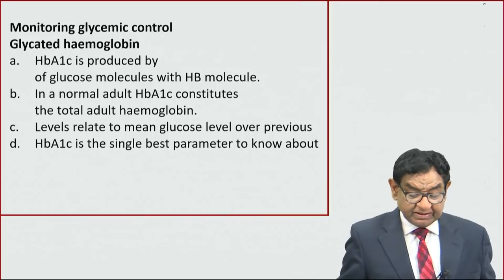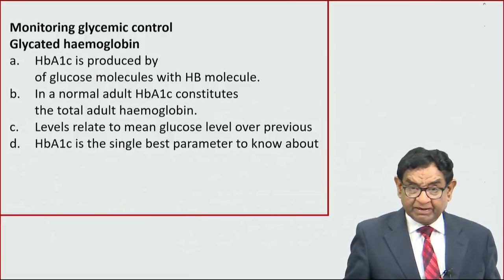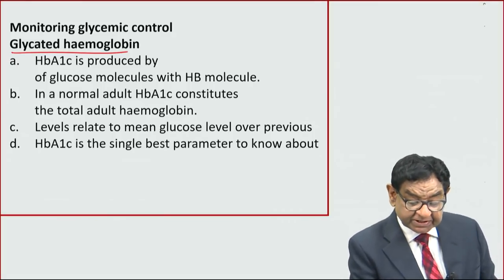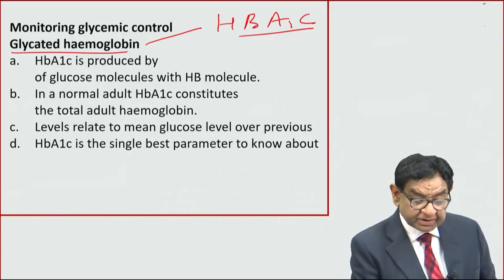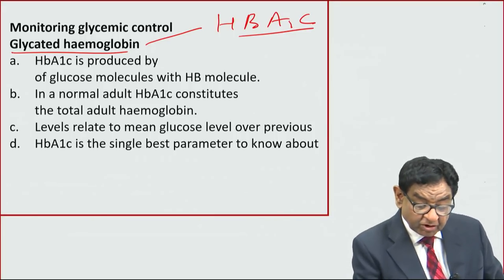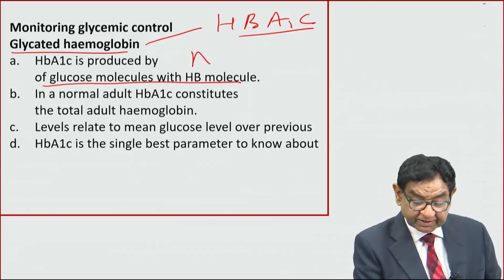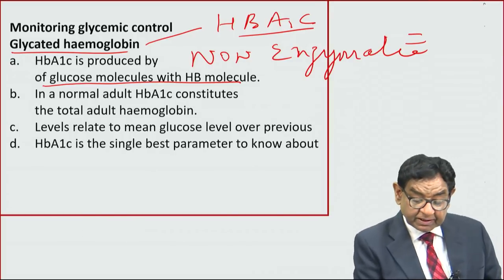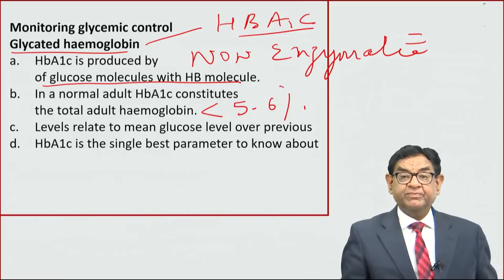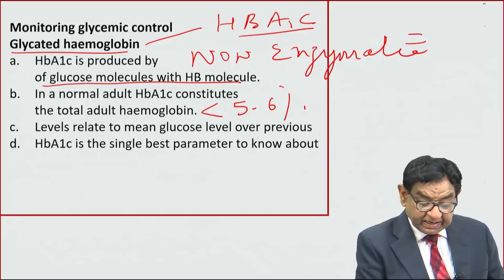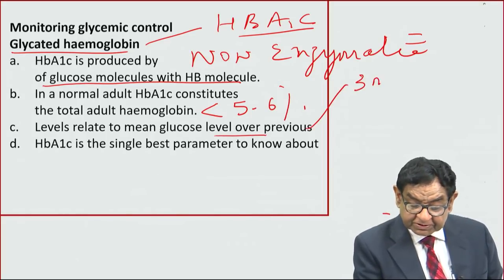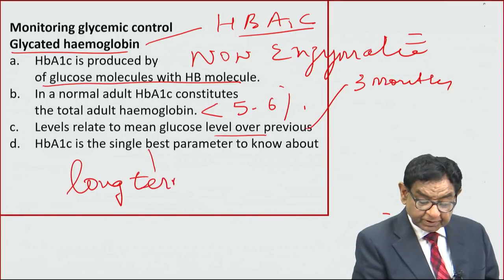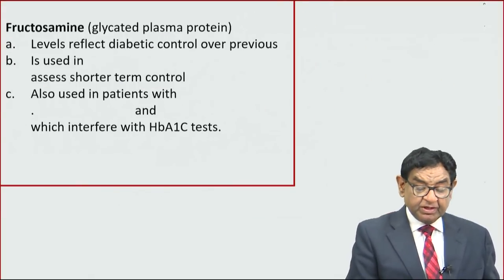How to monitor glycemic control: the traditional method is pre-prandial and post-prandial blood sugar. In addition to that, glycated hemoglobin — produced by non-enzymatic glycation of glucose with the hemoglobin molecule — gives us HbA1c. Normal in adults is less than 5.6%. The level relates to mean glucose over the last three months (12 weeks) and is the single best parameter to assess long-term diabetes control.